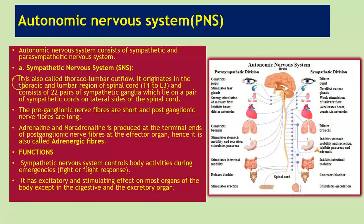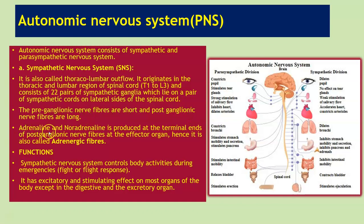The sympathetic nervous system (SNS) is also called thoracolumbar outflow. It originates in the thoracic and lumbar region of the spinal cord, T1 to L3, and consists of 22 pairs of sympathetic ganglia lying on a pair of sympathetic cords on the lateral sides of the spinal cord. The preganglionic nerve fibers are short and the postganglionic nerve fibers are long. Adrenaline and noradrenaline are produced at the terminal ends of the postganglionic nerve fiber at the effector organ, so they are also called adrenergic fibers.